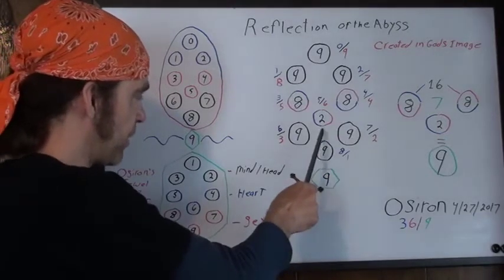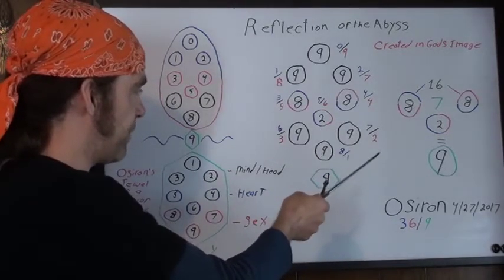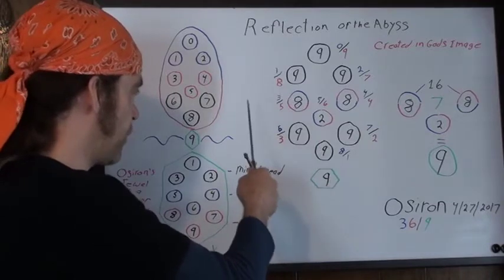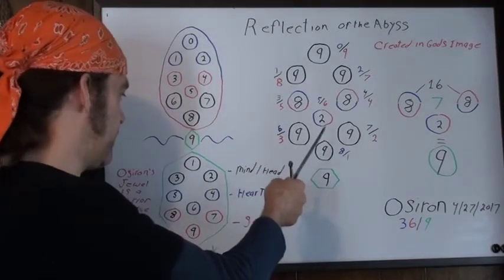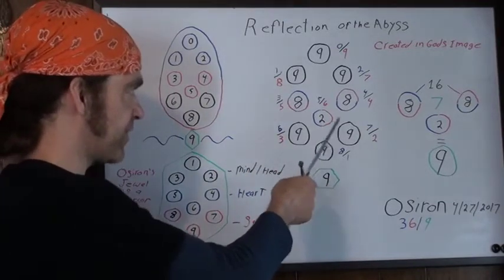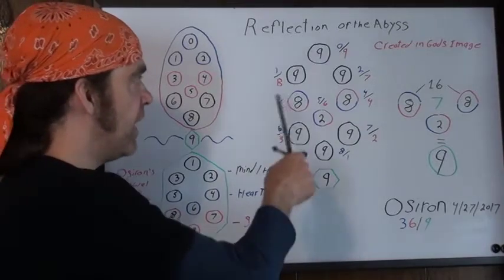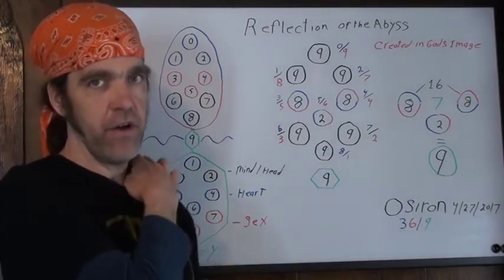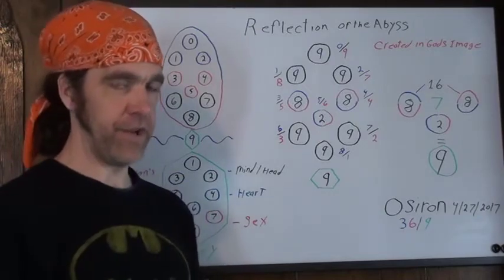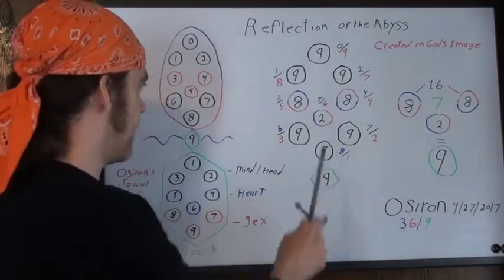And the same thing with this middle pillar. One number is a feminine representative on the true tree. And the jewel of creation is a six. And that's feminine to masculine. So it shows the continuous oscillation of the feminine and the masculine. So that's why I drew that like that.